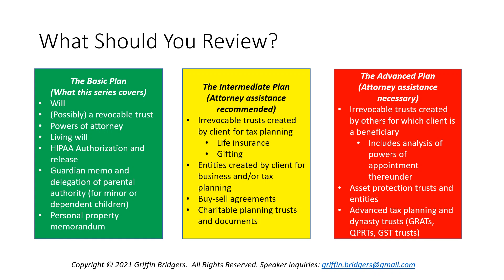The intermediate plan, where attorney assistance is recommended but on which you might want to gather documents, would include any irrevocable trusts that have been created by the client for tax planning generally — things like life insurance trusts or gifting trusts. You might also want to dig into entities that have been created either for business planning purposes and/or tax planning purposes. This can be a little more difficult because the client might be an employee or minority owner in a business where entity documents are harder to come by. Buy-sell agreements are a necessary offshoot of that — they may be within the entity documents or a standalone document, but it's important to get your head around buy-sell agreements because those shoehorn into the estate plan as well.